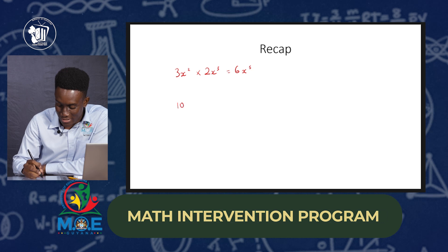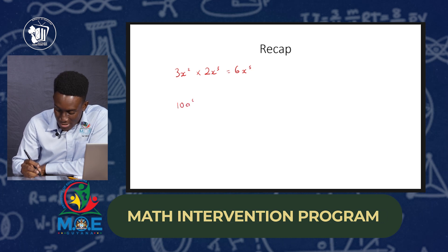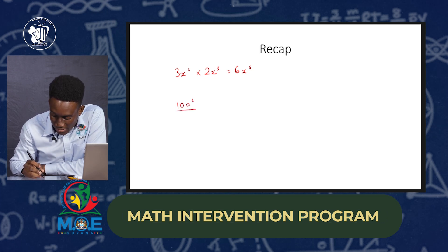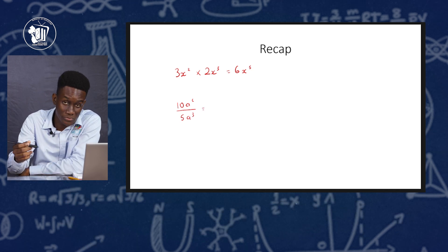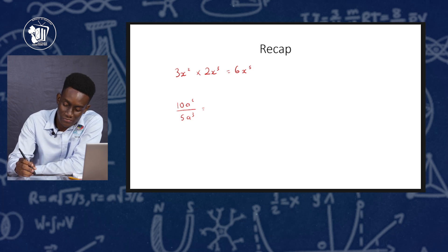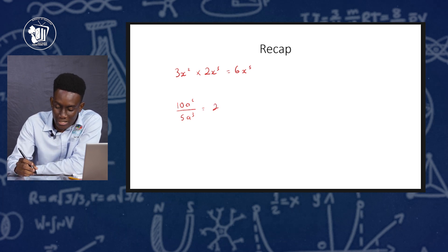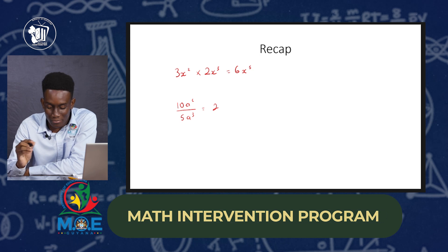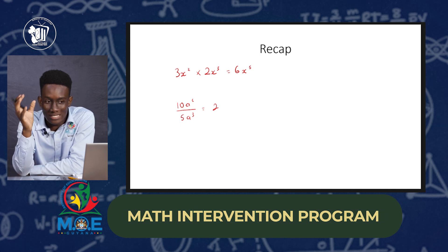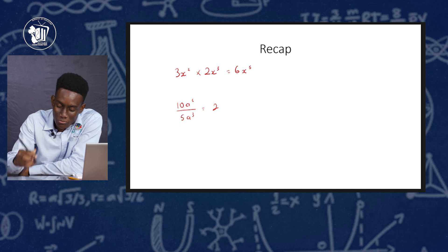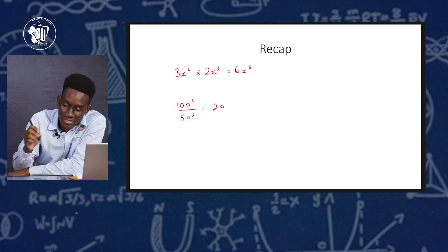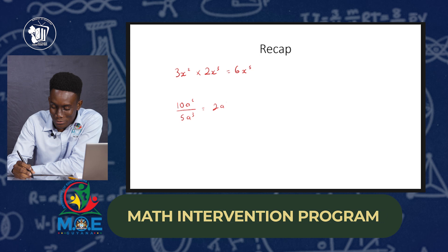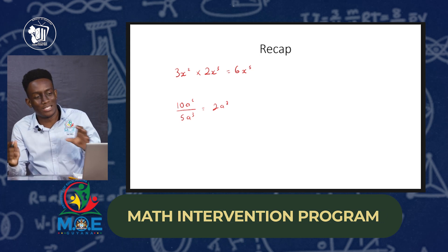The next example: 10a raised to the sixth power all divided by 5a to the third power. We divide the numbers — 10 divided by 5 gives you 2 — and then we divide the variables. The bases are the same, so we write back the base and subtract the indices: 6 subtract 3 gives you 3. And that is what we looked at last time.